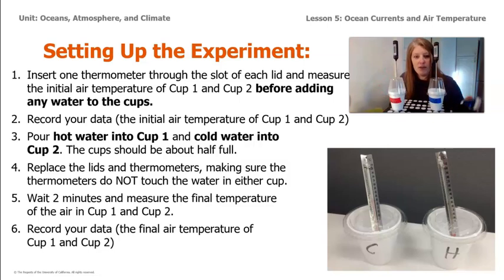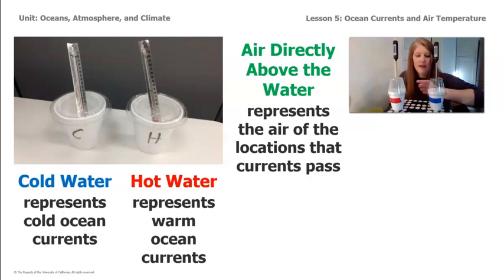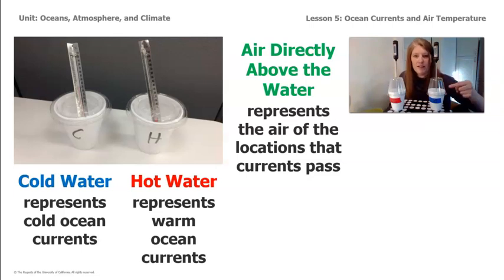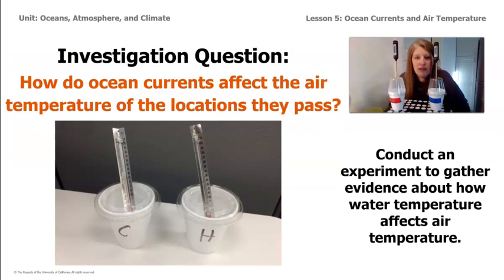Let's take a moment to talk about what the water represents. The cold water in this cup represents a cold ocean current, and the hot water in this cup represents a warm ocean current. The air in the cup represents the air directly above where those ocean currents are going. The thermometer is not touching the water — we're not measuring the temperature of the ocean currents, we're measuring the temperature of the air. Both cups started at about 22 degrees Celsius. While we're waiting, keep in mind what this is all about: what is the evidence we're trying to collect?